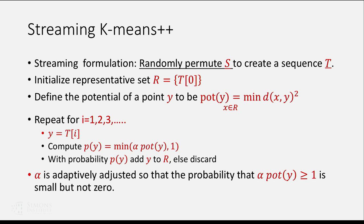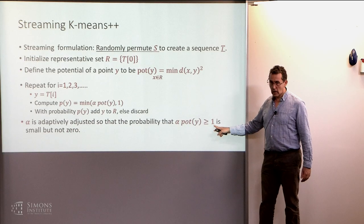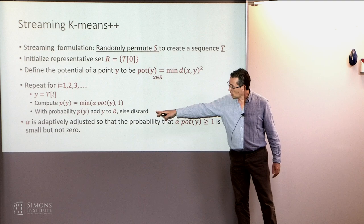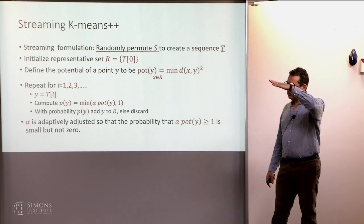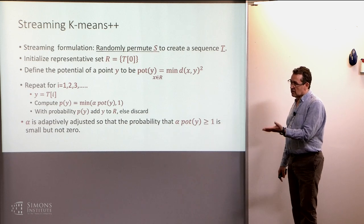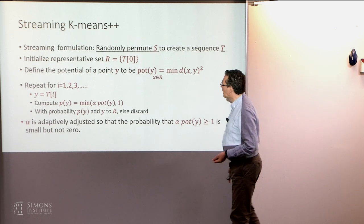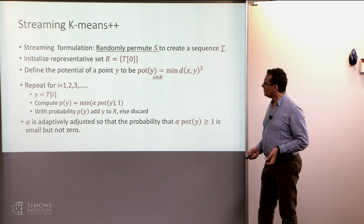And you just continue going on. And the question is how to adjust alpha. So you basically want to adjust alpha so that the probability that alpha times the potential of y is larger or equal to one is small but not zero. Right? So you want basically to use the full range. If you basically make them all small, then you're throwing away too many examples.